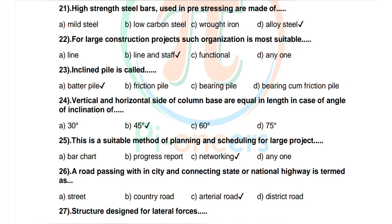Question 24 (continued): Correct answer is 45 degrees. Question 25: The most suitable method of planning and scheduling for large projects. Options: bar chart, progress report, network diagram. Correct answer is networking.